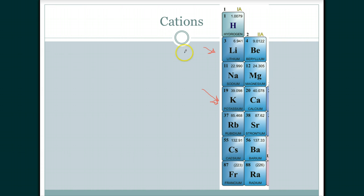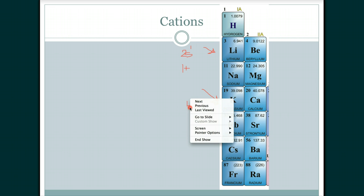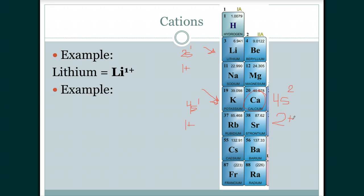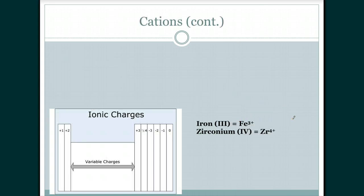For example, lithium has the configuration 2s¹, so it has one electron on the outer shell. Once it gives that up, it becomes positively charged with a charge of +1. Potassium has 4s¹, so it will also give up one electron and become +1. Calcium, right next to potassium, has 4s² — two electrons on the outer shell — so if it loses both electrons it becomes a positively charged cation of +2.